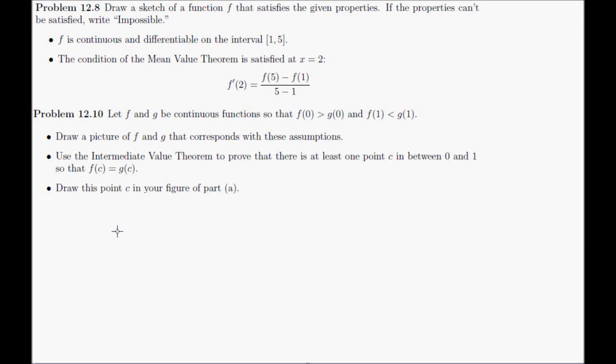So for problem number 8, draw a sketch of a function that has the properties: f is continuous and differentiable on the region from 1 to 5, and the condition of the Mean Value Theorem is satisfied at x equals 2. f prime of 2 equals f of 5 minus f of 1 over 5 minus 1.